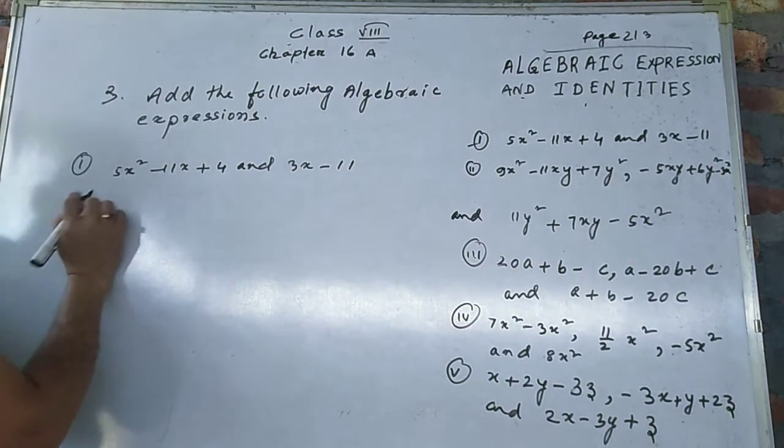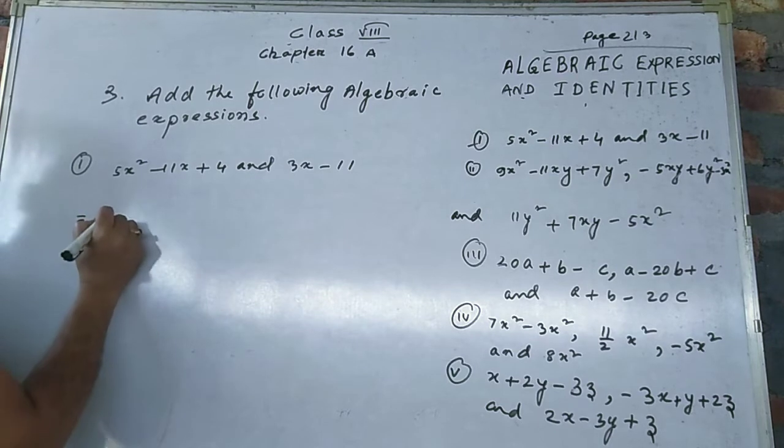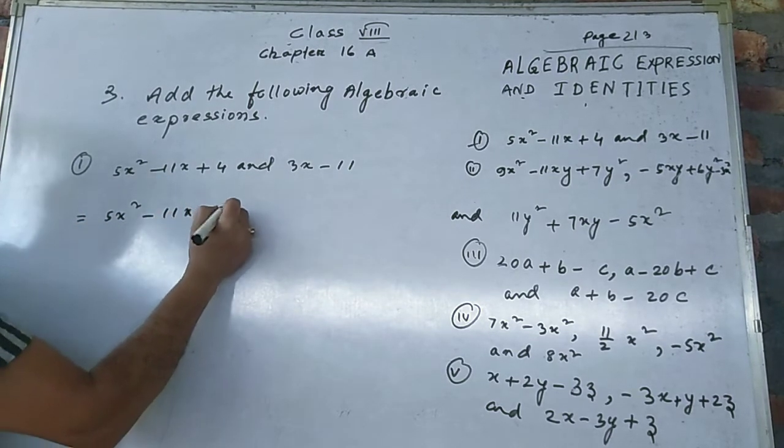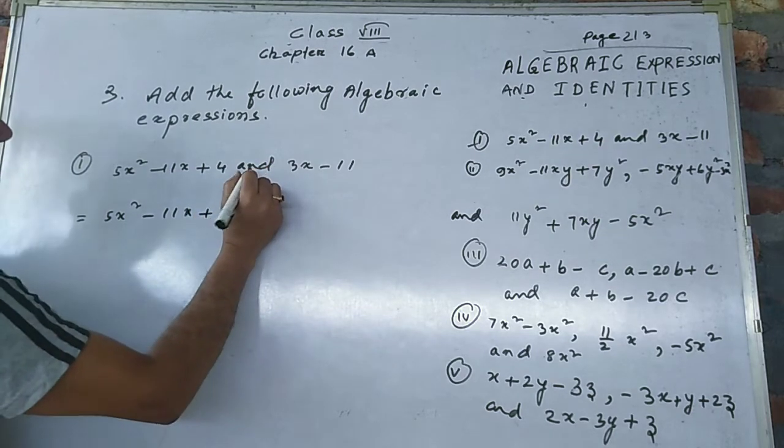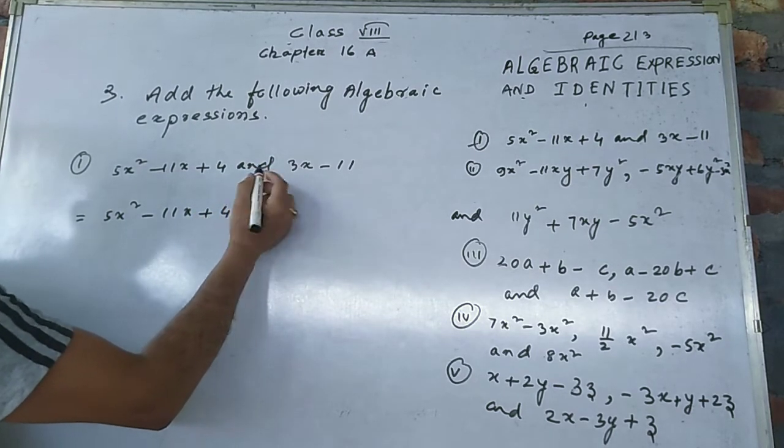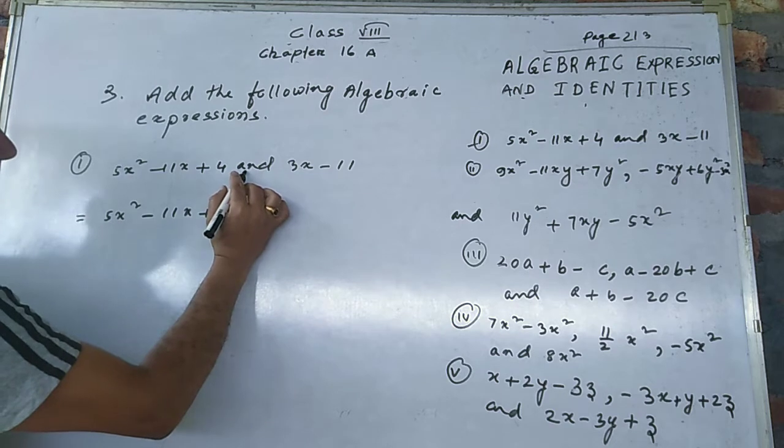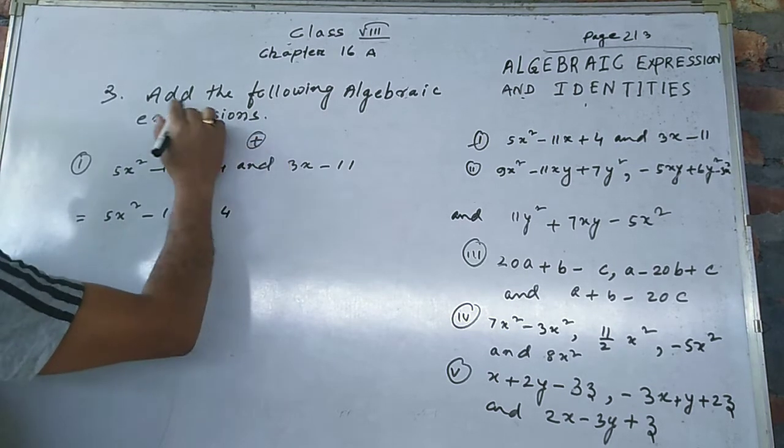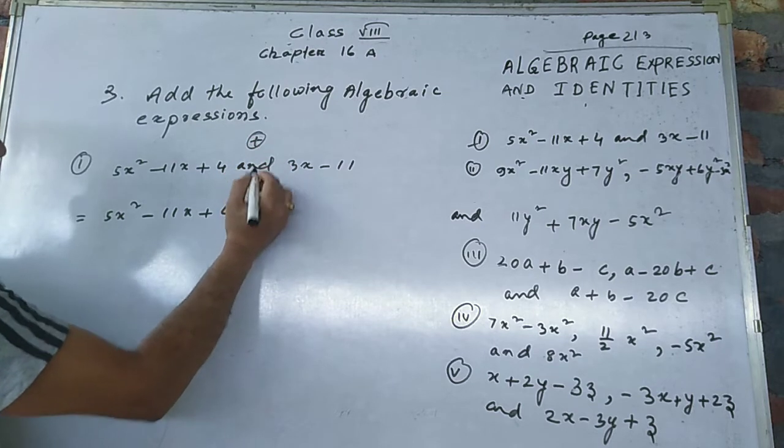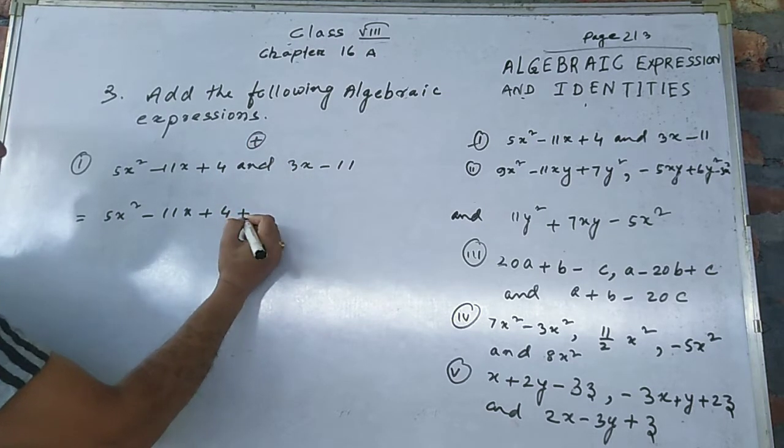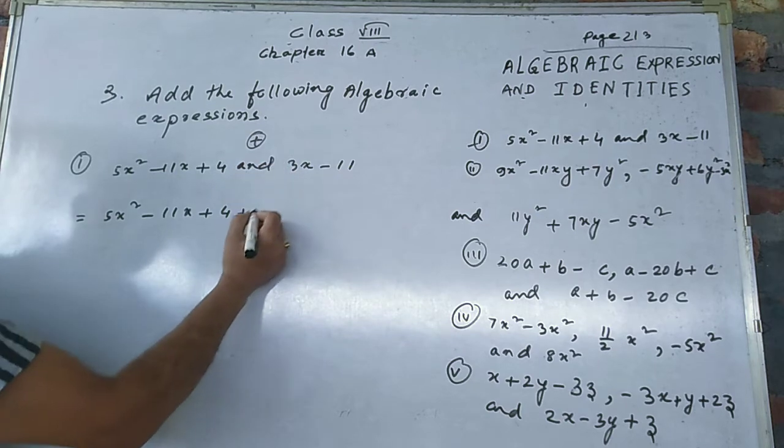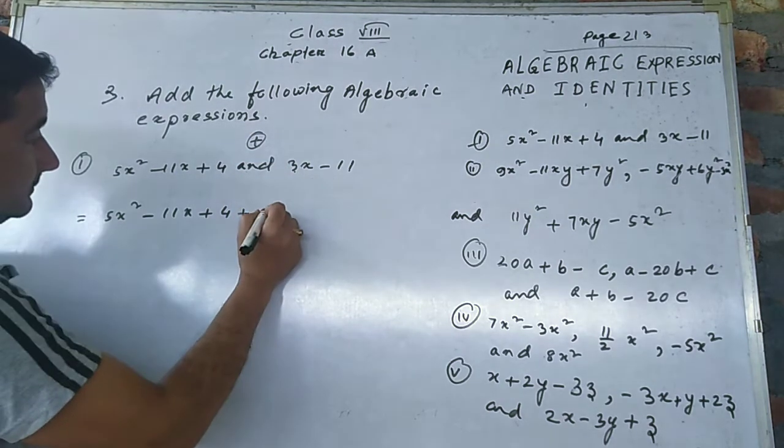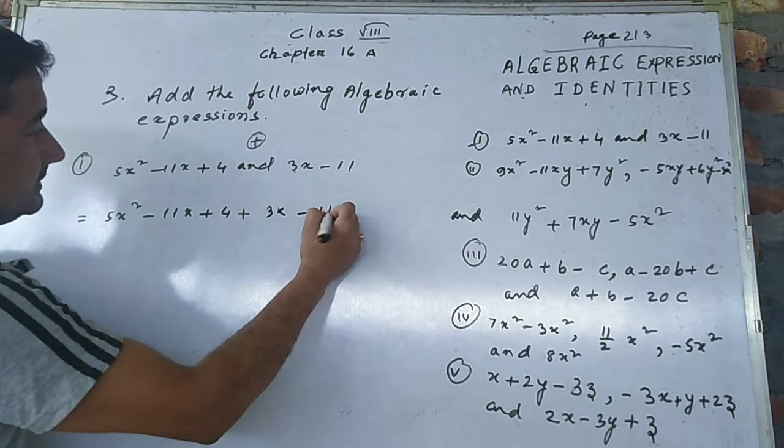In add, add means you can write the plus sign. Add means plus. If subtract, then you write minus. You write plus here because add means plus, and subtract is minus. Another term: 3x minus 11.